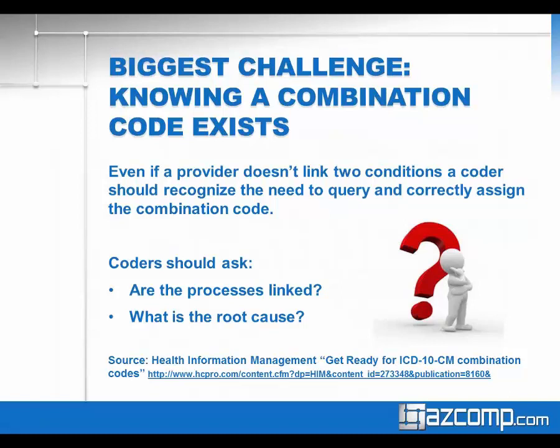If you're fully relying on just the mapping tool, it's going to find a general equivalent, but if a combination code is available that's more specific to your patient's scenario, knowing that the code exists is one of the challenges. When presented with multiple codes for a patient, it would be wise to ask: are the processes linked, and what is the root cause?